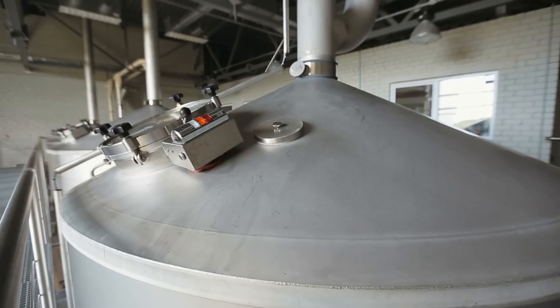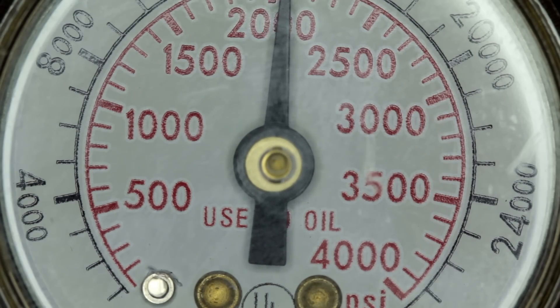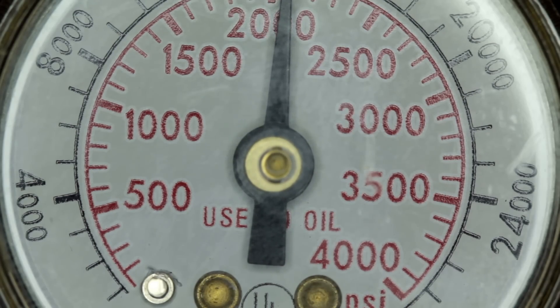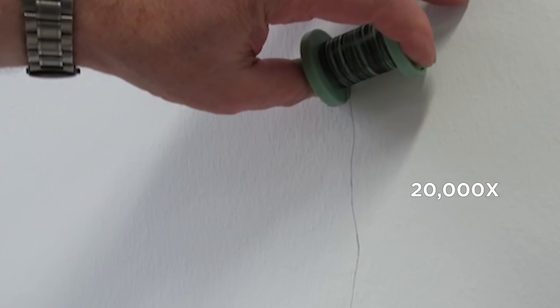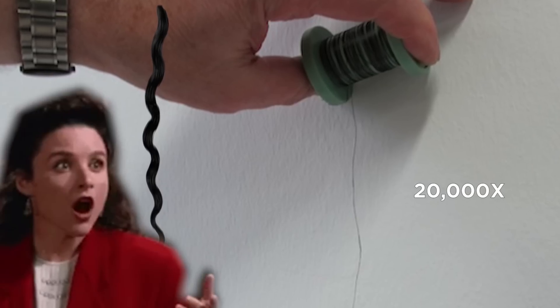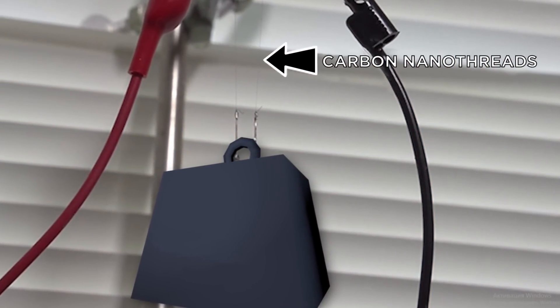The way they're created is by compressing liquid benzene into extreme pressure, 200,000 times the air pressure at the surface of the Earth. It measures only three carbons across and is 20,000 times thinner than a single human hair. Don't let its size fool you though. The substance is one of the stiffest, strongest nanomaterials ever made.